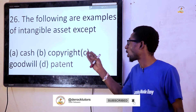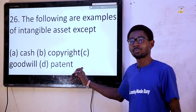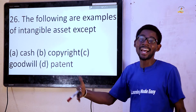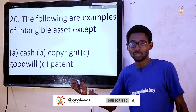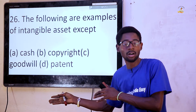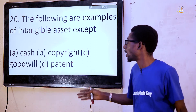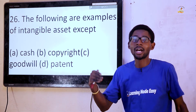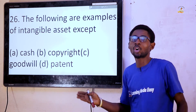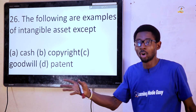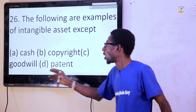Option A: cash. Option B: copyright — the right of an author. Option C: goodwill — the probability that the business will continue to have customers even when there is a change in management. Option D: patent rights — the right of an inventor over his work to protect against piracy. So the answer is option A, cash, which is a current asset, not an intangible asset.